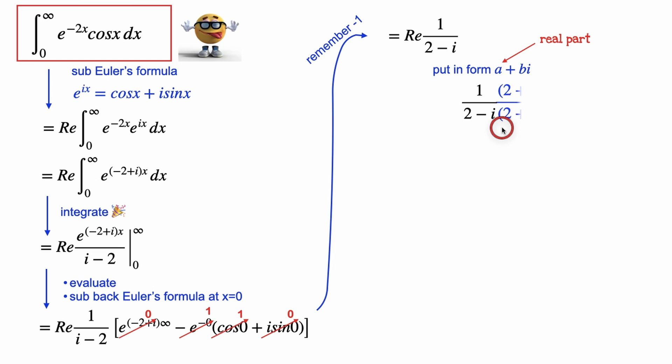And we'll do that by multiplying the top and bottom by the conjugate. And knowing that i equals the square root of negative 1, and i squared equals negative 1, if we sub that in, simplify this, we get 2 plus i divided by 5.